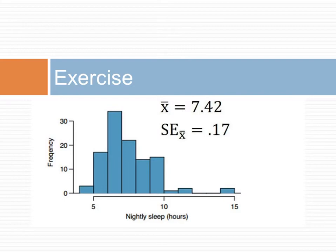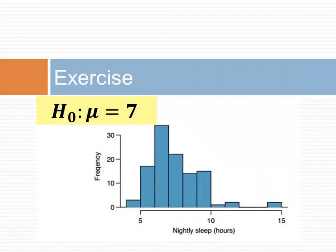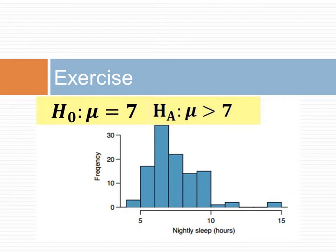Suppose the sample distribution of hours of sleep for 110 college students is as indicated. What is the probability that our sample comes from a distribution with a mean of 7? To begin, we have to check assumptions. Data are moderately skewed and we assume independence. Therefore, the central limit theorem tells us that the mean of the sample has a normal distribution. Once assumptions have been checked, we state the hypothesis. The null hypothesis is that the population has a mean of 7 hours of sleep. The alternative hypothesis is that the population has a mean larger than 7 hours. Notice that this is a one-sided test.